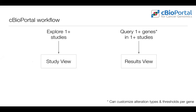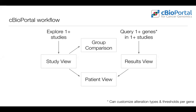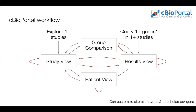So how do you actually use cBioPortal? There are two ways to get started: you can select one or more studies to explore in our interactive study view, or you can query specific genes in specific studies, which brings you to a results view with a series of tabs. From either of these, you can look at individual patients in our patient view, or define and compare groups using our group comparison feature. cBioPortal is very interactive — from any view you can rerun a query, explore a different subset of patients, and really dig into the data.